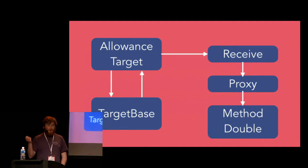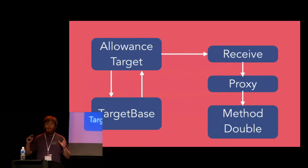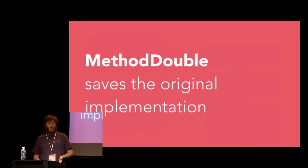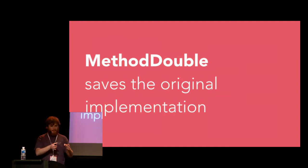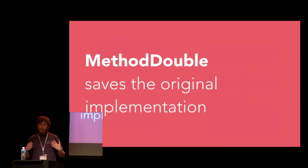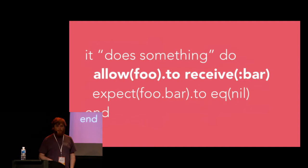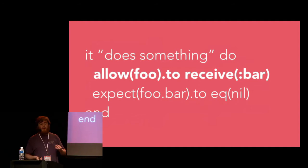The mock proxy then creates an object called a method double for the stubbed method. The method double is responsible for managing the stubbed implementation and the original implementation of the method — it swaps them out and swaps them back at the end of your test. The method double saves the original implementation of the method — in this case foo.bar — then places the stubbed implementation onto the object and allows the test to continue to run.